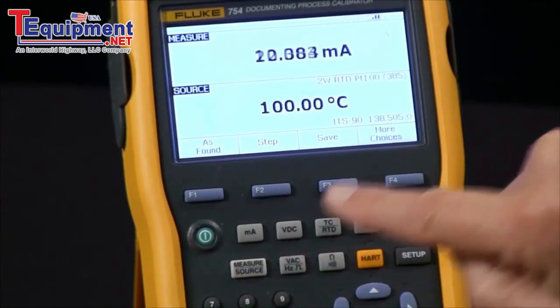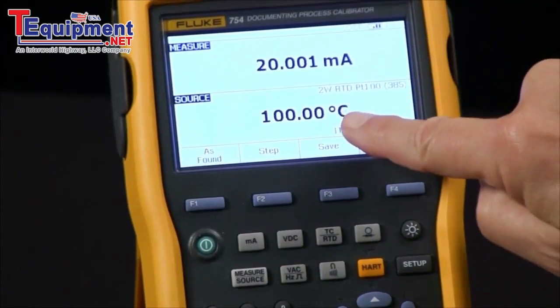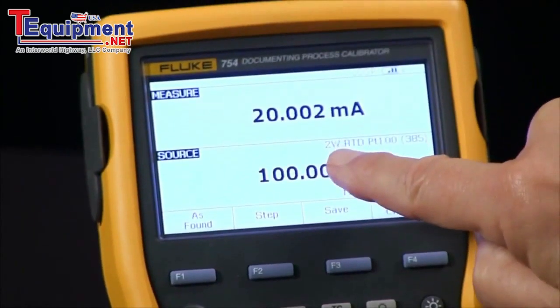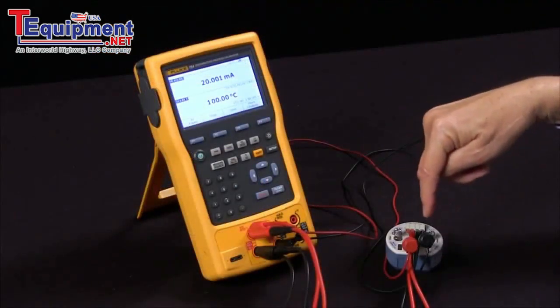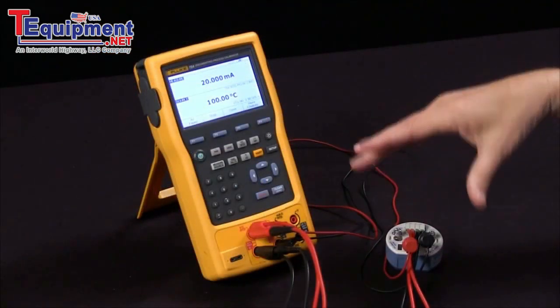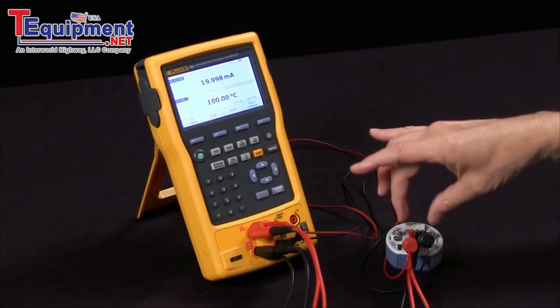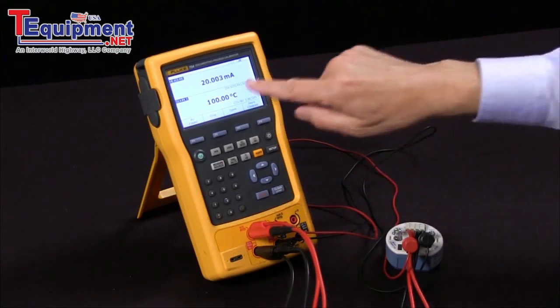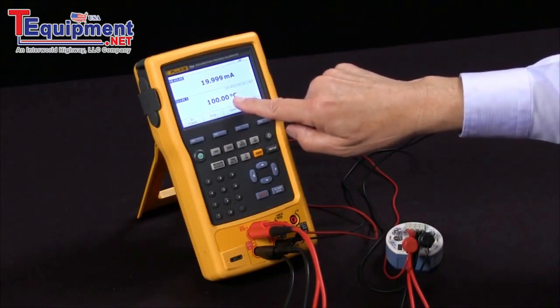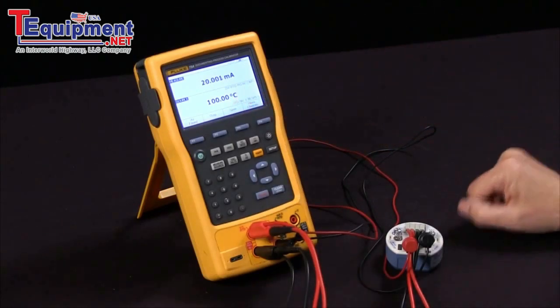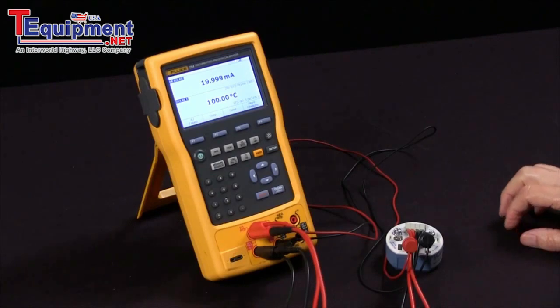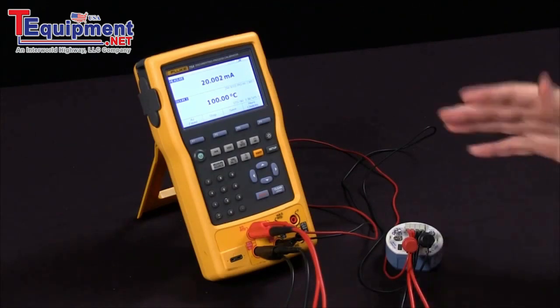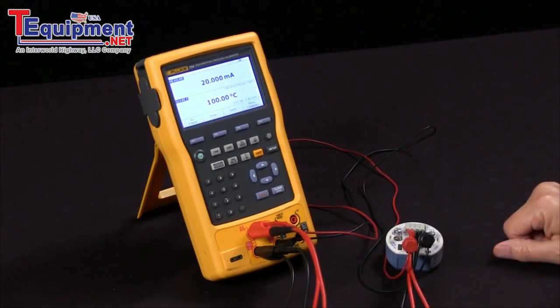Going back to the source measure screen, now I'm sourcing 2-terminal RTD platinum 100 ohm 385 to the transmitter, so I'm simulating a very accurate RTD to the transmitter and it's reading 100 degrees C as it should be. That's how we source an RTD to a device that we're trying to simulate RTD for.